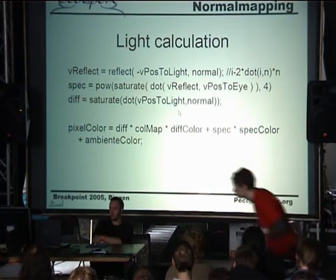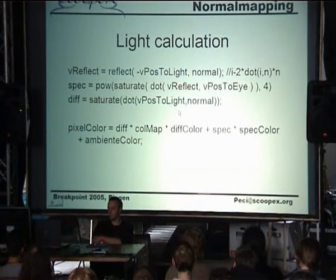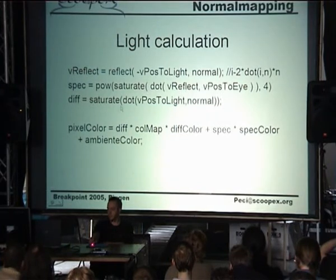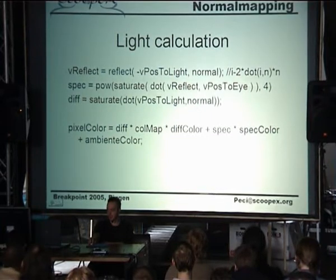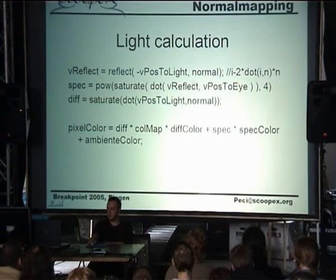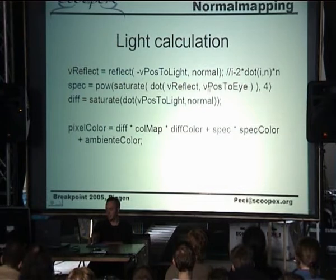Just to remember how you would do a per-pixel lighting calculation — a Phong model — you calculate the reflection, you calculate the specularity from the reflection dot product with the viewing vector, and you calculate the diffuse factor by using the dot product of the light direction and the normal. Then you put that together, multiplying with the color of the texture map, the color of the light, and the specularity color, and then at the end you add the ambient color. This formula stays the same. The only difference with Normal Mapping is you don't take the normal from the object — you look it up from a map.